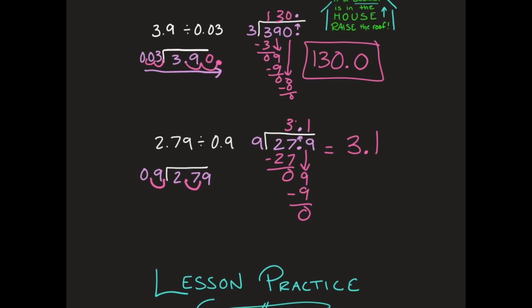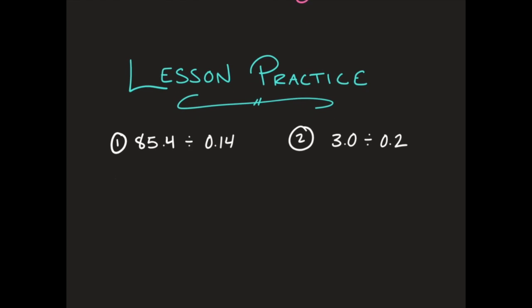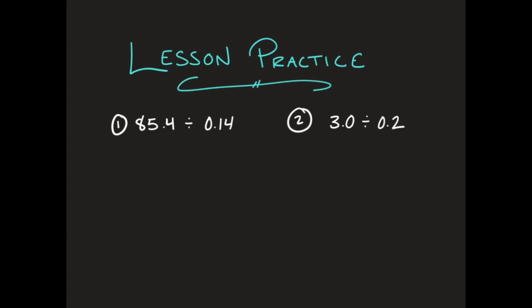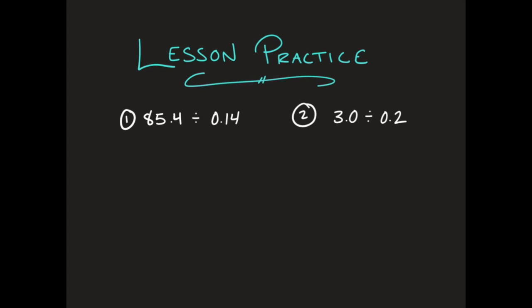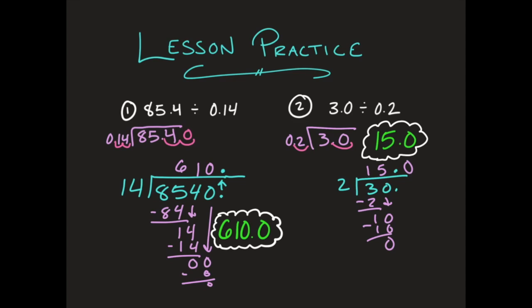You have a few lesson practice problems, so go ahead and pause your video, try these yourself, and when you're done check your work to see if you've grasped this division of decimals by decimals concept. Here are your answers: for number 1 your answer was 610 and 0 tenths, and for number 2 your answer was 15 and 0 tenths. You had to move the decimal point 2 times in the first problem and only one time in the second problem.